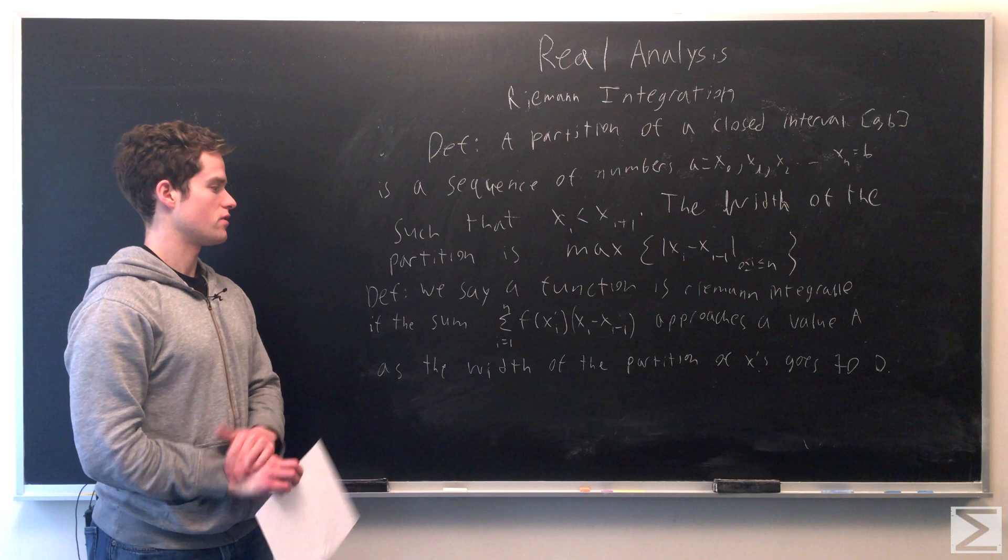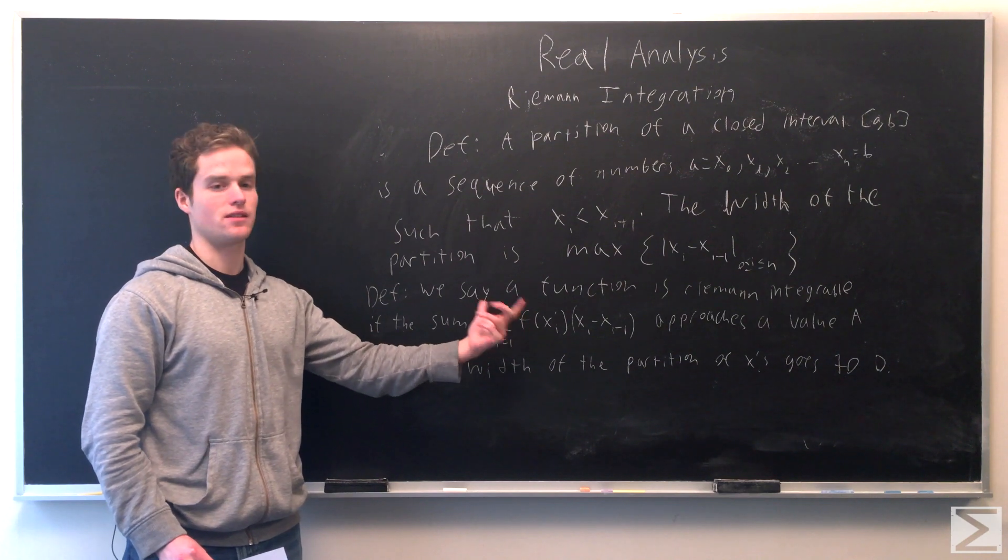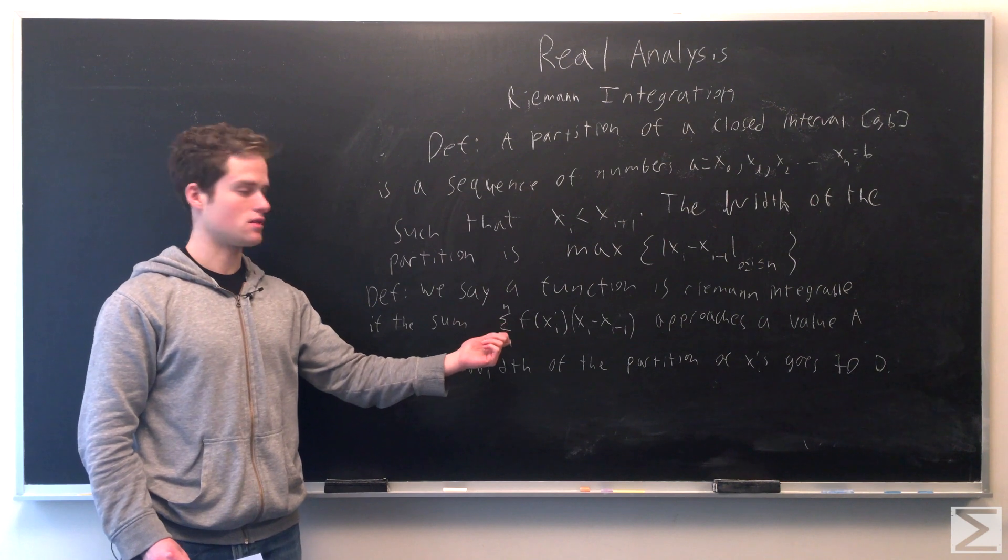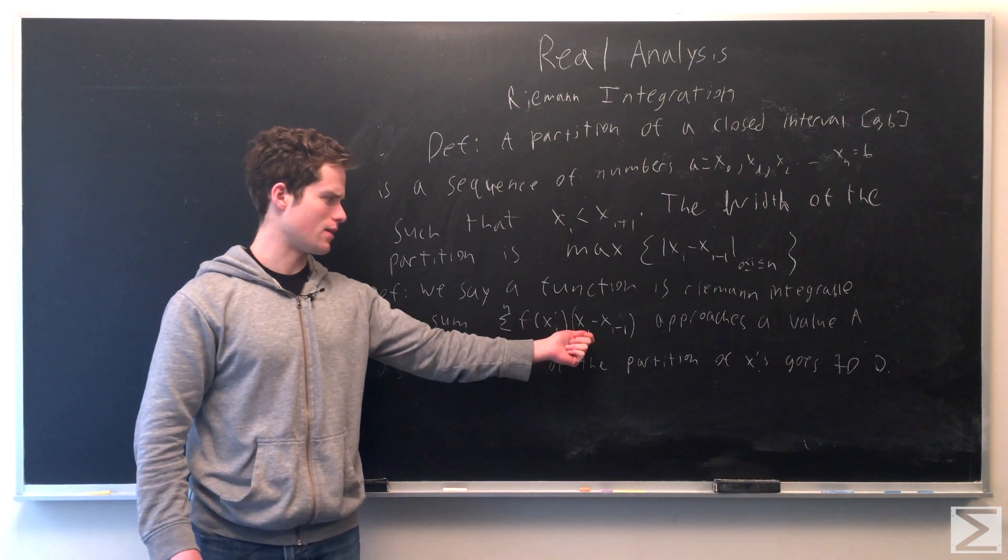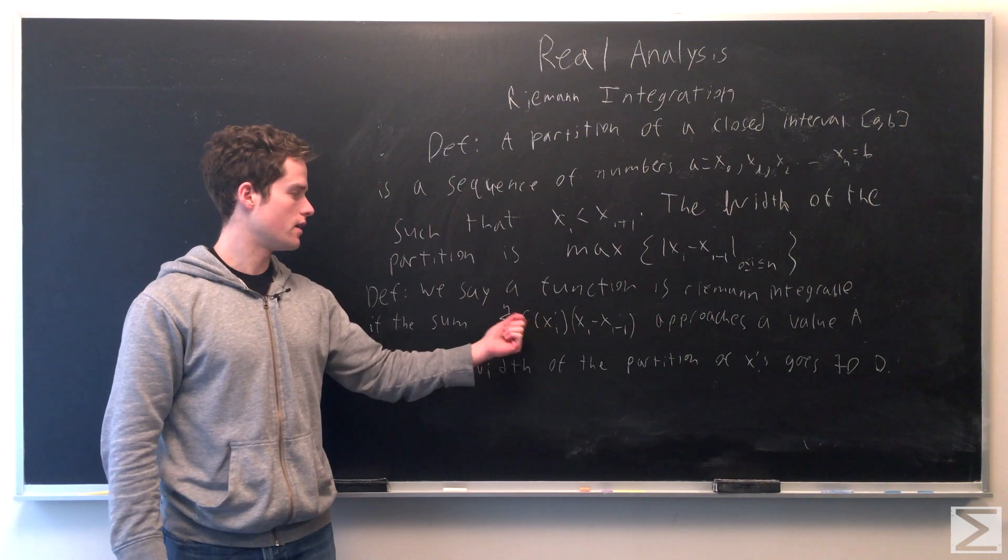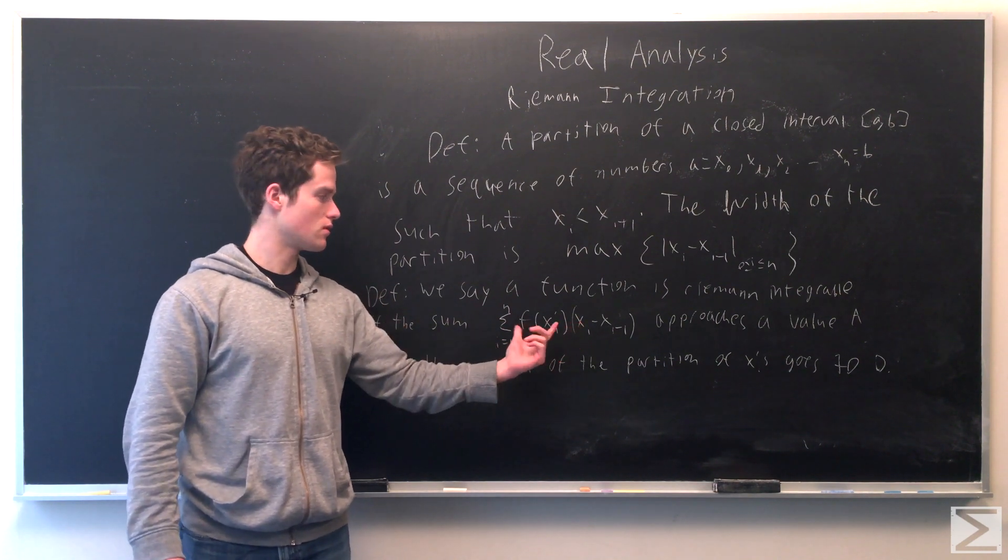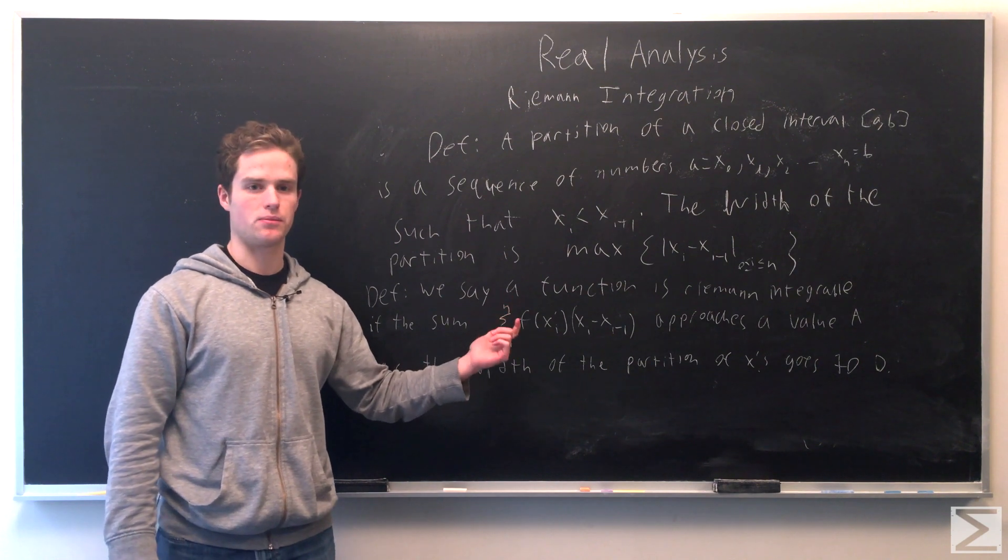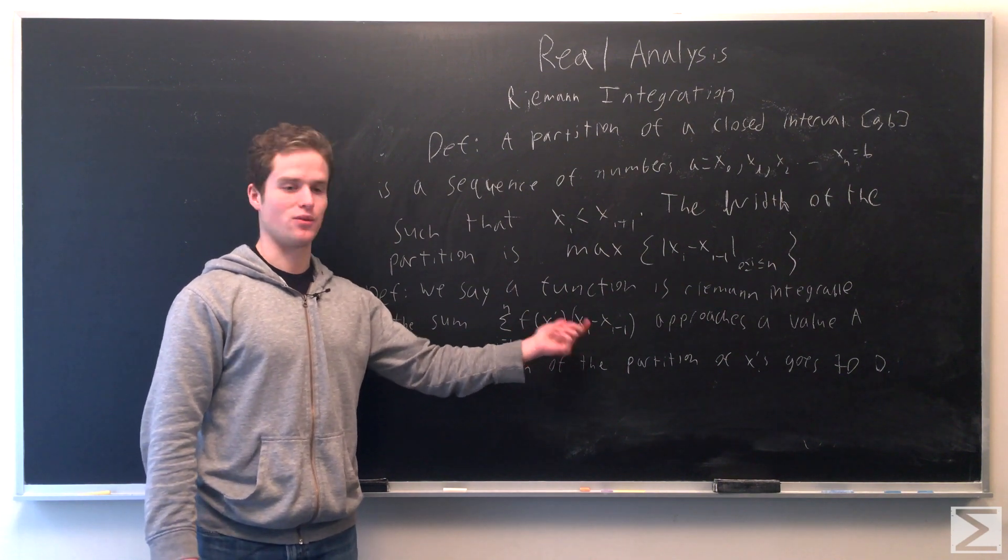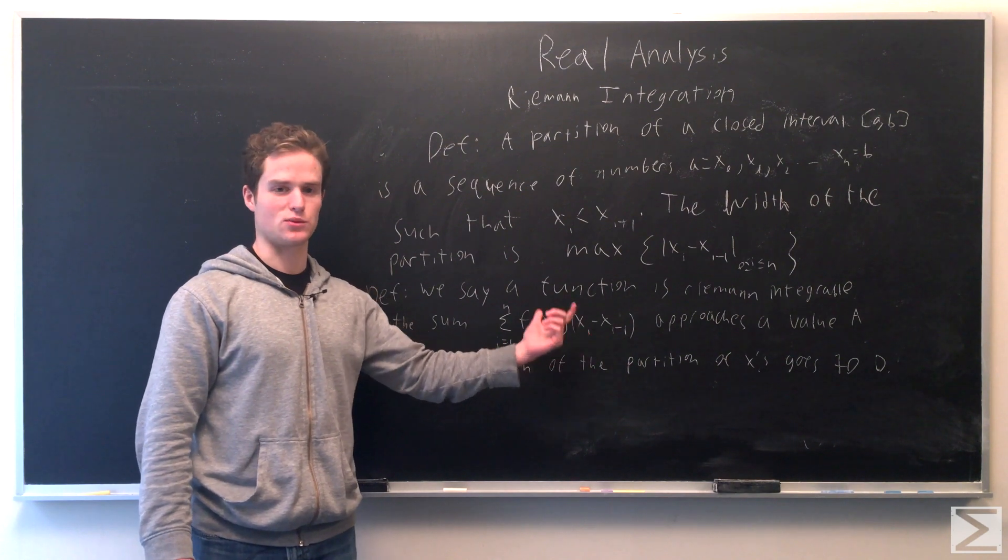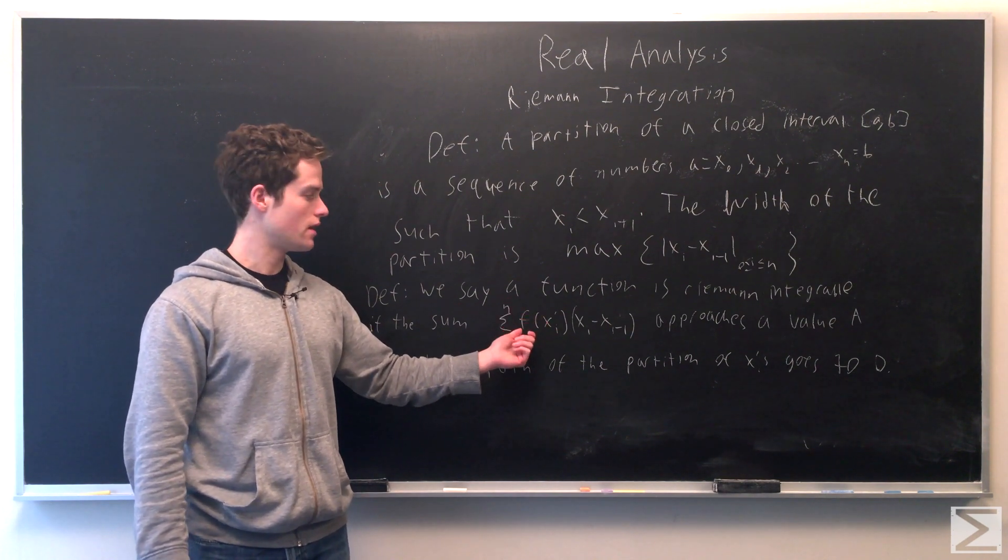We say a function has a Riemann integral if - let's say f(x) is defined on some interval [a,b]. We take some partition of xᵢ's on this interval. The sum from i=1 to n of f(xᵢ') times (xᵢ - xᵢ₋₁), where xᵢ' is just some number between xᵢ₋₁ and xᵢ - it's arbitrary. As the width of this partition goes to 0, this sum will approach some number, which will be the value of its integral. So this approaches some value, which will be the integral of f(x) on the interval [a,b].